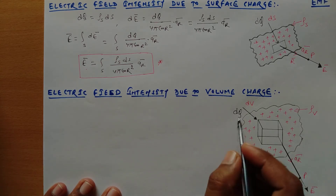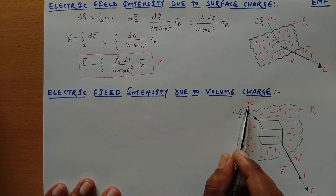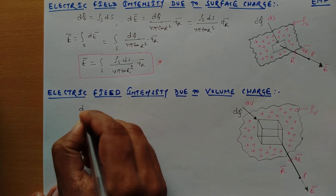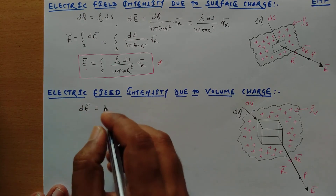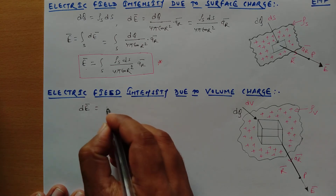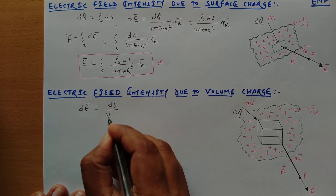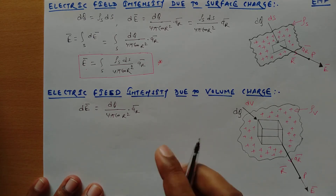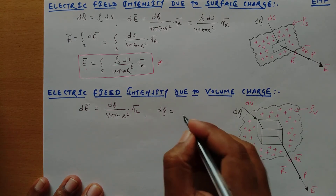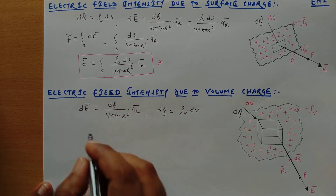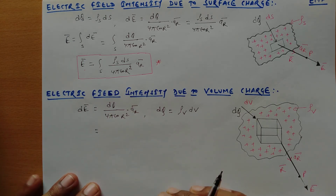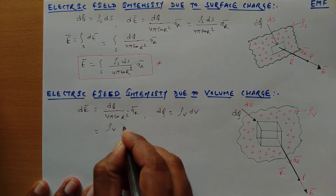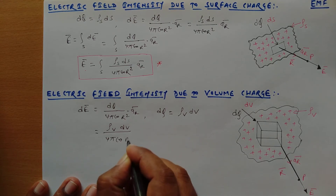Since we are taking the differential volume, the differential volume carries differential charges, and we can find the differential amount of the electric field. This is given by dE = dq / (4πε₀r²) times ar. We can also define the differential charge as ρv times dv. So the differential amount of the electric field intensity is dE = ρv·dv / (4πε₀r²) times ar.